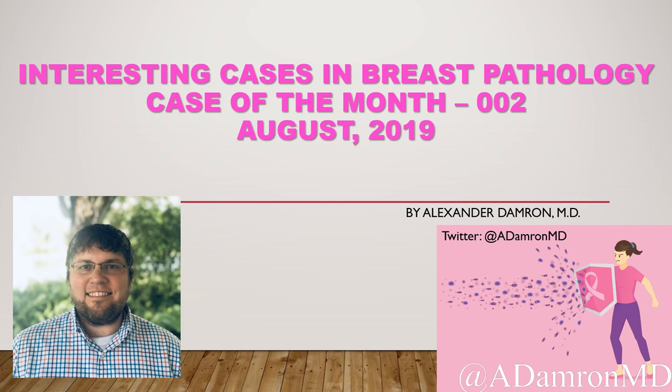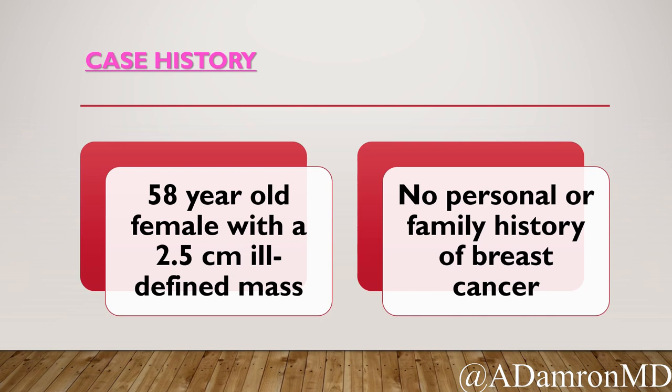Just before we get started, I do have permission from Expert Path to use some of their images in these presentations - their logo will be on those. You can follow me on Twitter at @ADamronMD where I post breast cases of the week. Now let's jump right into the case. Our case is a 58-year-old female with a two-and-a-half centimeter ill-defined mass, no personal or family history of breast cancer, who has lived a relatively healthy life up to this point.